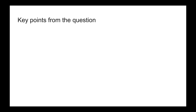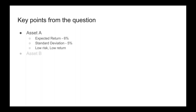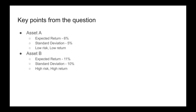We want to get some key points from the question. We have asset A with an expected return of 6% and a standard deviation of 5% — this is our low risk, low return asset. Then we have asset B with expected return of 11% and standard deviation of 10% — high risk, high return. Make sure to check this: a common mistake is mixing up the values. What you want in these questions is one asset that has low risk/low return and one that has high risk/high return. If it's a blend, you may have misread the question.